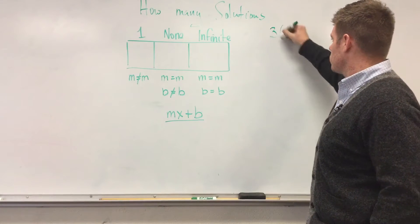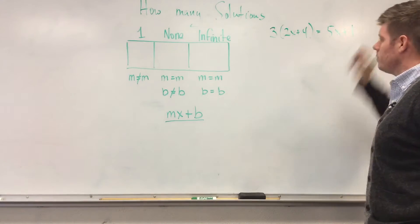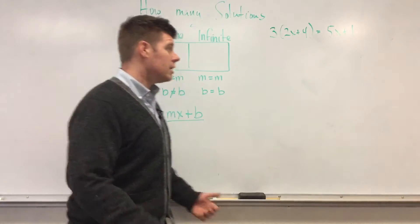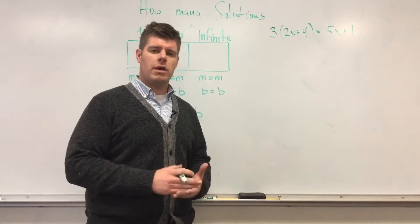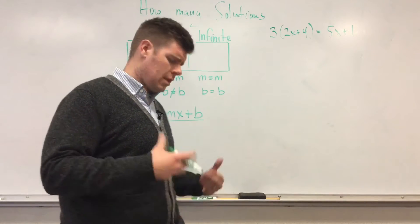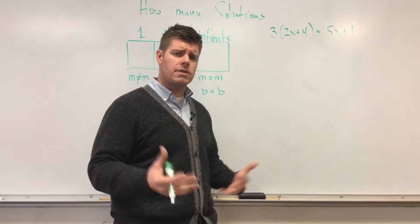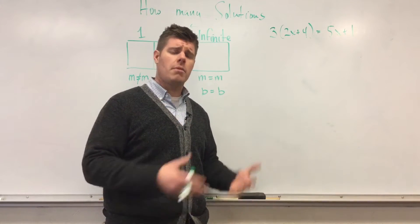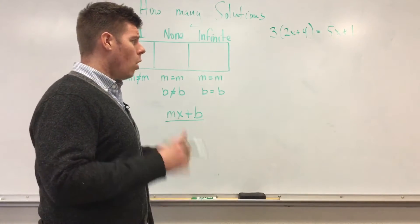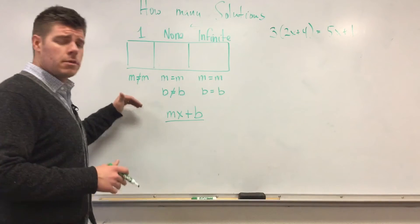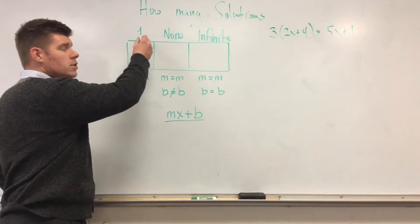Here's an example: 3(2x + 4) = 5x + 1. Before I even work it out, the question is: am I going to find an actual answer? That's important because a lot of people, when first learning to solve equations, get held up on the idea of zero. We need to understand zero is a number — it can be found on the number line. The goal is to determine how many solutions I have before solving.